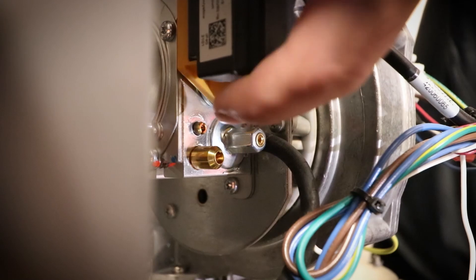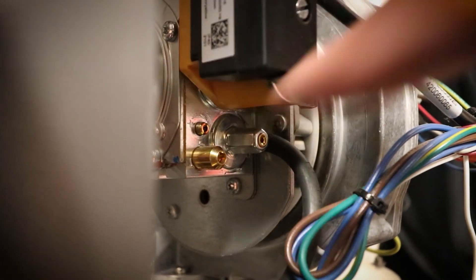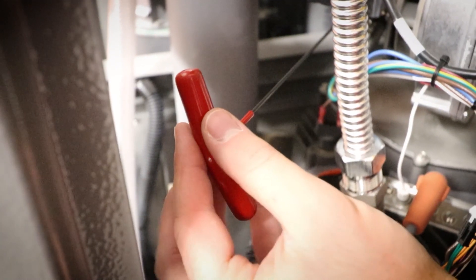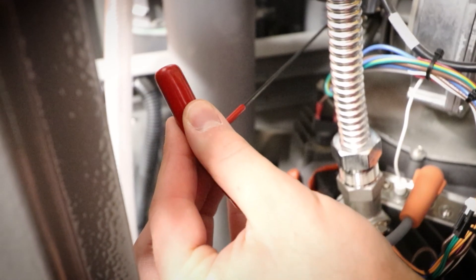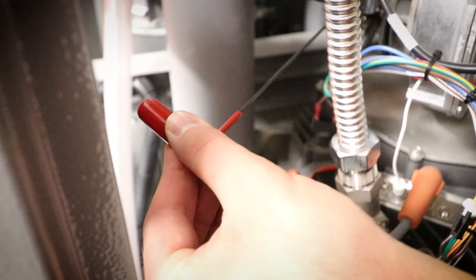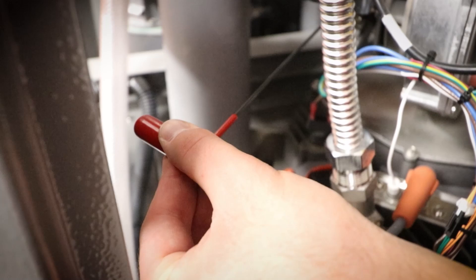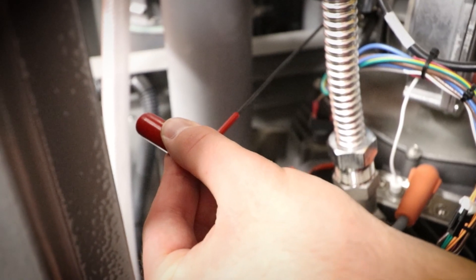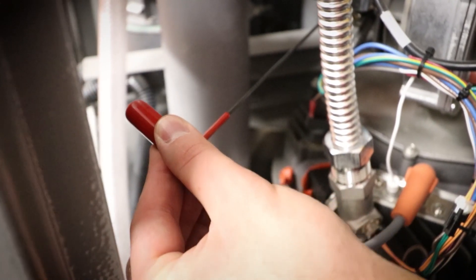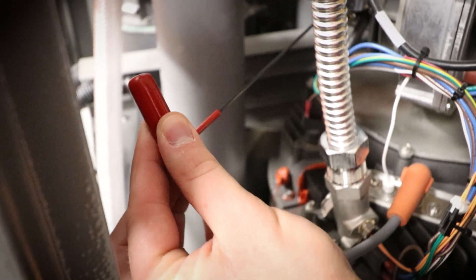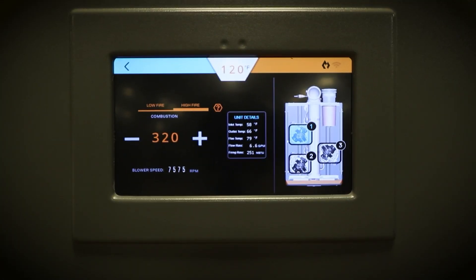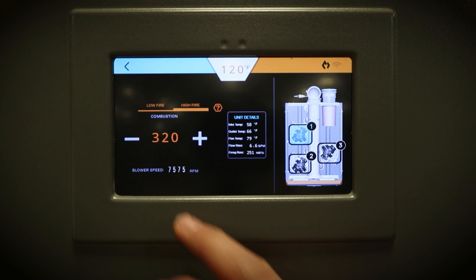If an adjustment is needed, locate the high fire screw on the gas valve and turn it counterclockwise to increase the CO2 percentage and clockwise to decrease the CO2 percentage. Do not adjust more than one quarter turn at a time. When the CO2 and CO values have settled in the acceptable range for at least two minutes, you can enter low fire by pressing low fire on the display screen.